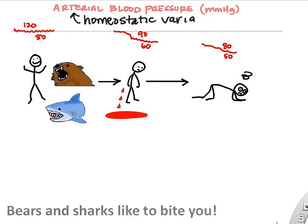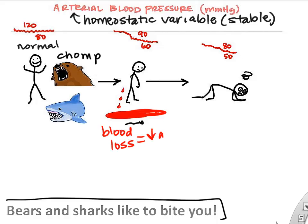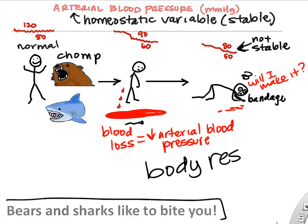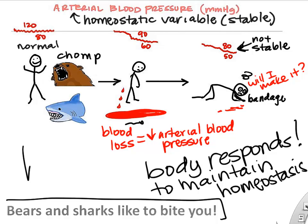Let's look at blood pressure first. Arterial blood pressure is normally about 120 over 80 or 110 over 60. If you were to lose a lot of blood — say a bear or shark bites you — your blood pressure goes down. If it gets too low, you won't be circulating essential things like oxygen and glucose, and you could die. So your body makes adjustments to maintain homeostasis and keep blood pressure as stable as possible.